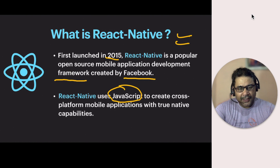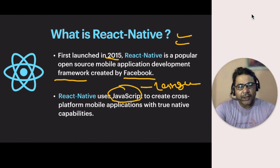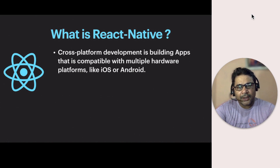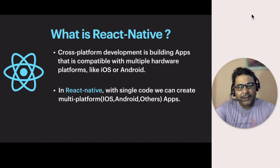JavaScript is the language used here — similar to how Swift and Objective-C are used for native iOS development, and Java and Kotlin are used for native Android development. In React Native, we use JavaScript for cross-platform mobile application development. Cross-platform development means building apps compatible with multiple hardware platforms like iOS, Android, and Windows. With a single codebase, we can create apps for multiple platforms.